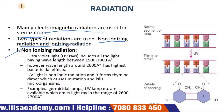Non-ionizing radiation — ultraviolet light — includes all light with wavelengths between 1500 to 3900 angstroms. The wavelength around 2600 angstroms has the highest bactericidal effect. UV light forms thymine dimers, which cause mutation and kill microorganisms. Germicidal UV lamps emit light in the range of 2600 to 2700 angstroms.